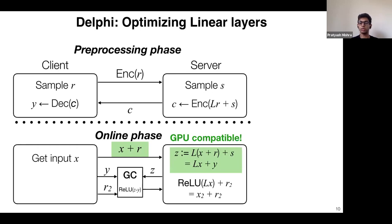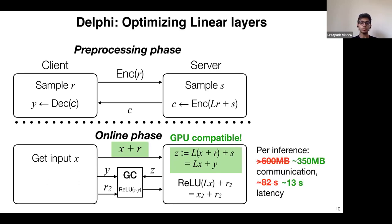Because the online phase operates only over native values — not over ciphertexts, but just over masked native values — all these computations are GPU-compatible and can be executed on the GPU. Together, these optimizations allow us to reduce communication almost in half and latency down to almost 13 seconds.